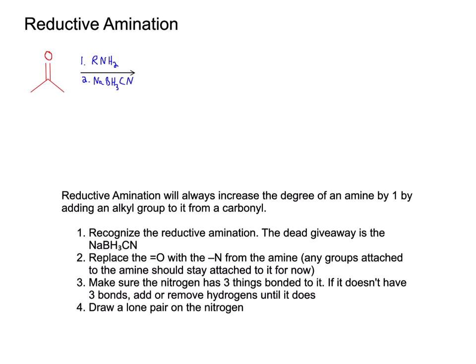Because the mechanism is so long, it's better to use a shortcut to get to the final product. Once we recognize that we're doing a reductive amination — with the dead giveaway being NaBH3CN — we're simply going to replace the double bond O with a single bond N from the amine. Any groups attached to the amine should stay attached to it. Once you have that drawn, make sure the nitrogen has three things bonded to it. If it doesn't have three bonds, simply add or remove hydrogens until it does. Then draw a lone pair on the nitrogen. We started with a primary amine RNH2, and after reductive amination we've added another R group to the nitrogen, making it a secondary amine.